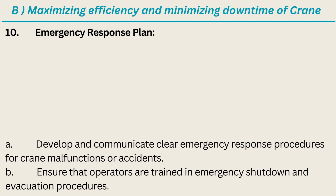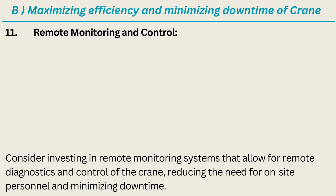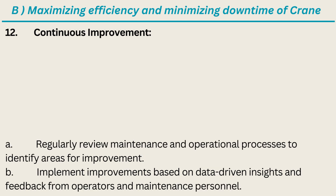Tenth: Emergency Response Plan — develop and communicate clear emergency response procedures for crane malfunctions or accidents. Ensure that operators are trained in emergency shutdown and evacuation procedures. Eleventh: Remote Monitoring and Control — consider investing in remote monitoring systems that allow for remote diagnostics and control of the crane, reducing the need for on-site personnel and minimizing downtime. Twelfth: Continuous Improvement — regularly review maintenance and operational processes to identify areas for improvement. Implement improvements based on data-driven insights and feedback from operators and maintenance personnel.